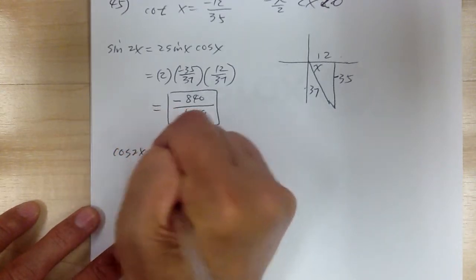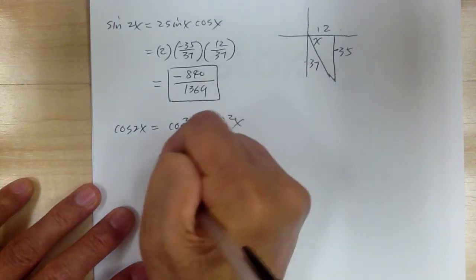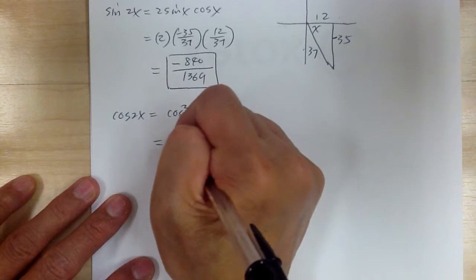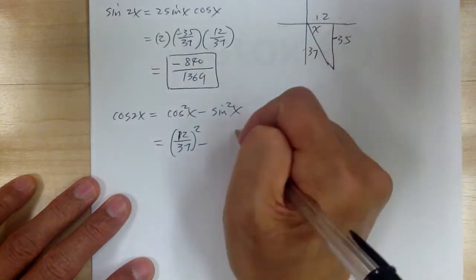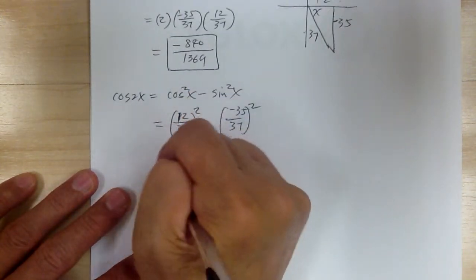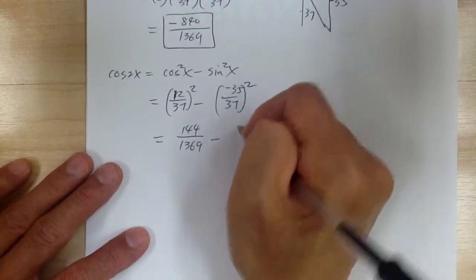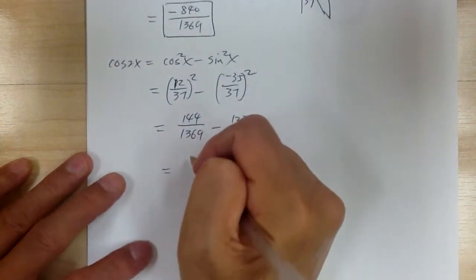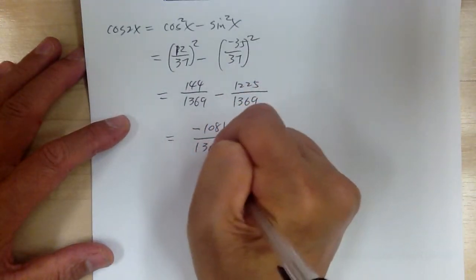And cosine 2x equals cosine squared x minus sine squared x. Cosine is 12 over 37 squared, minus sine which is negative 35 over 37 squared. This gives you 144 over 1369 minus 1225 over 1369, which equals negative 1081 over 1369.